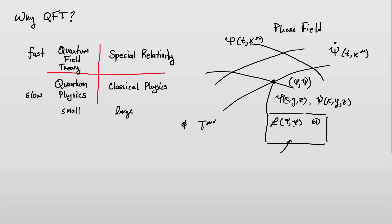So what else lives in this space? Well, operators — an operator lives at a particular point in this phase field. We pick a point in the phase field, we've picked a state, and we can operate on that state with any arbitrary operator. There are also commutators located in this space as well. These two — operators and commutators — are the big boys when it comes to quantum mechanics.